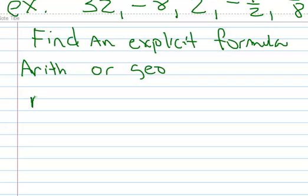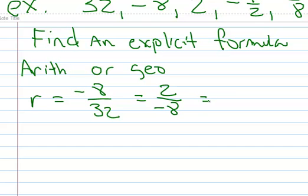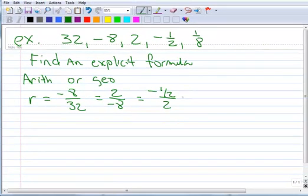But I'm going to find r and see if it really is geometric. So if it's geometric, the common ratio between all the terms is the same. So you take the second term and divide it by the first term, which is the same as the third term divided by the second term, which is the same as the fourth term divided by the third term, and so on and so forth. And when you do this, you see you get negative 1 quarter. So r is negative 1 quarter.